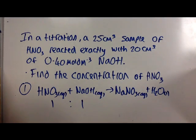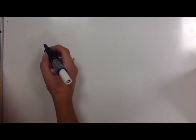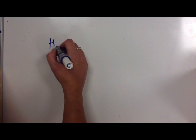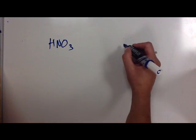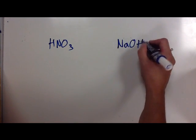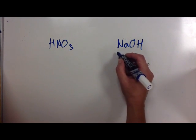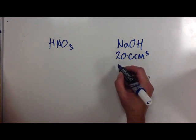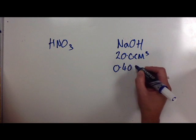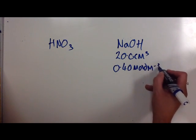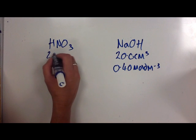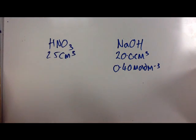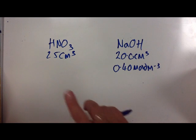We've written our balanced equation, which is our first step. The next thing, then, is to pick the information out and put it in the relevant place. I would recommend making two columns, one for your acid and one for your sodium hydroxide. The information given to us in the question is that we have 20 centimetres cubed of sodium hydroxide, and it has a concentration of 0.40 moles per decimetres cubed. The nitric acid, we're told, we have 25 centimetres cubed. By picking the information from the question and putting it into two separate columns, it should help you to organise your answer.